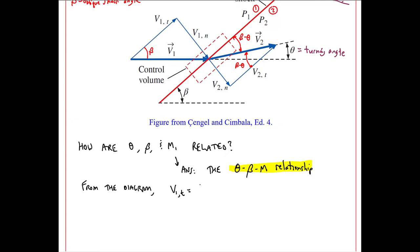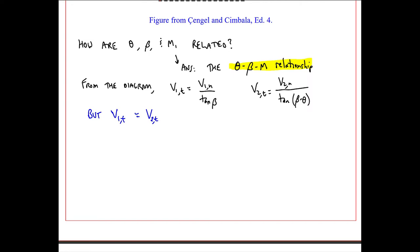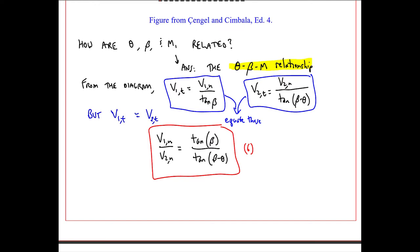From the diagram, the tangential component V1T is V1N over tangent beta. Similarly, V2T is V2N over tangent beta minus theta. But as discussed last time, the tangential components V1T and V2T don't change across the shock. So we equate these two equations and write our result as a ratio V1N over V2N, which turns out to be tangent beta over tangent beta minus theta. I'll call this equation 6, following my equation numbers from the previous lecture.